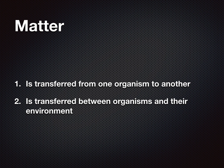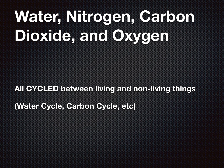The environment either helps or hurts, but matter is transferred between different things and where they live. Next, you have water, nitrogen, carbon dioxide, and oxygen. You need to know these are all cycled between living and non-living things. You're very familiar with the water cycle, and there's also the carbon cycle. Carbon dioxide and oxygen from photosynthesis and cellular respiration are also cycled between living and non-living things — meaning it occurs in a predictable pattern over and over again.